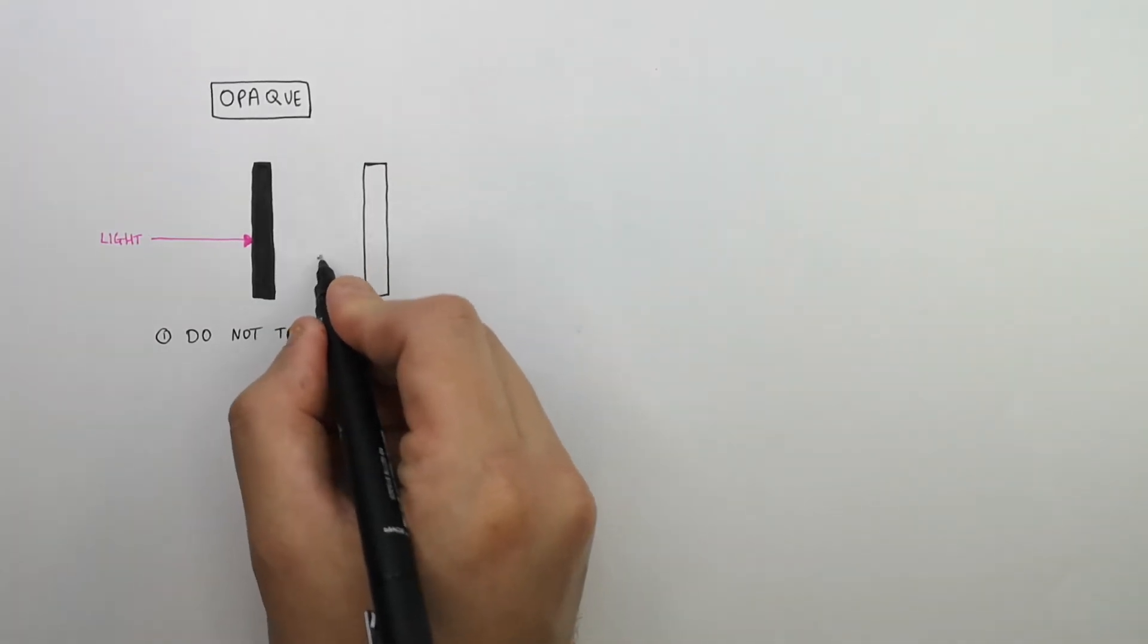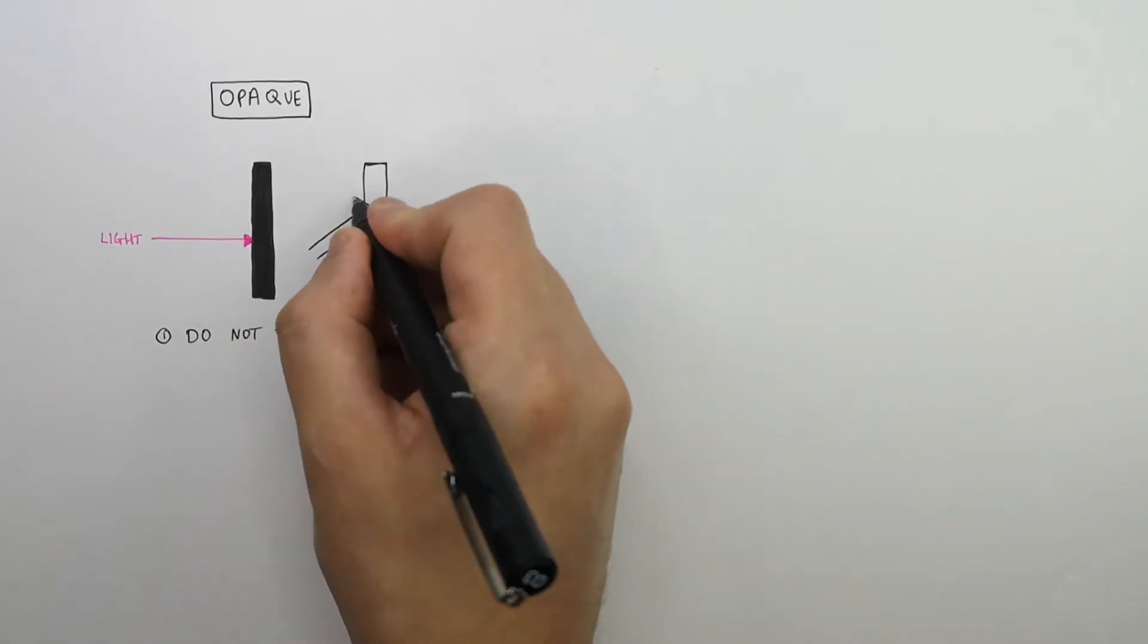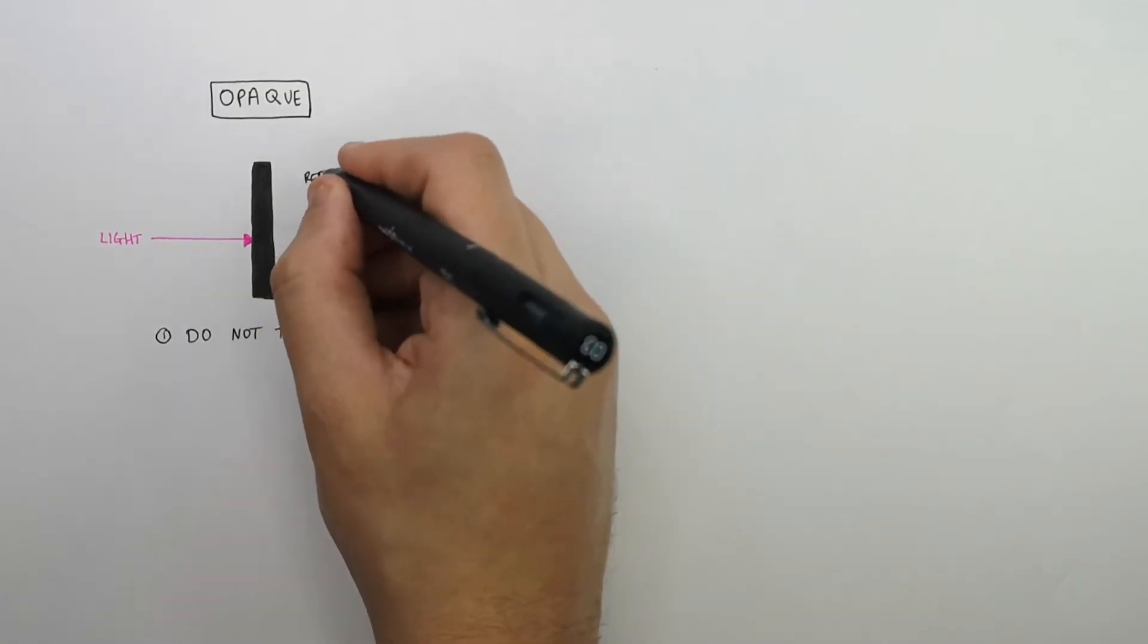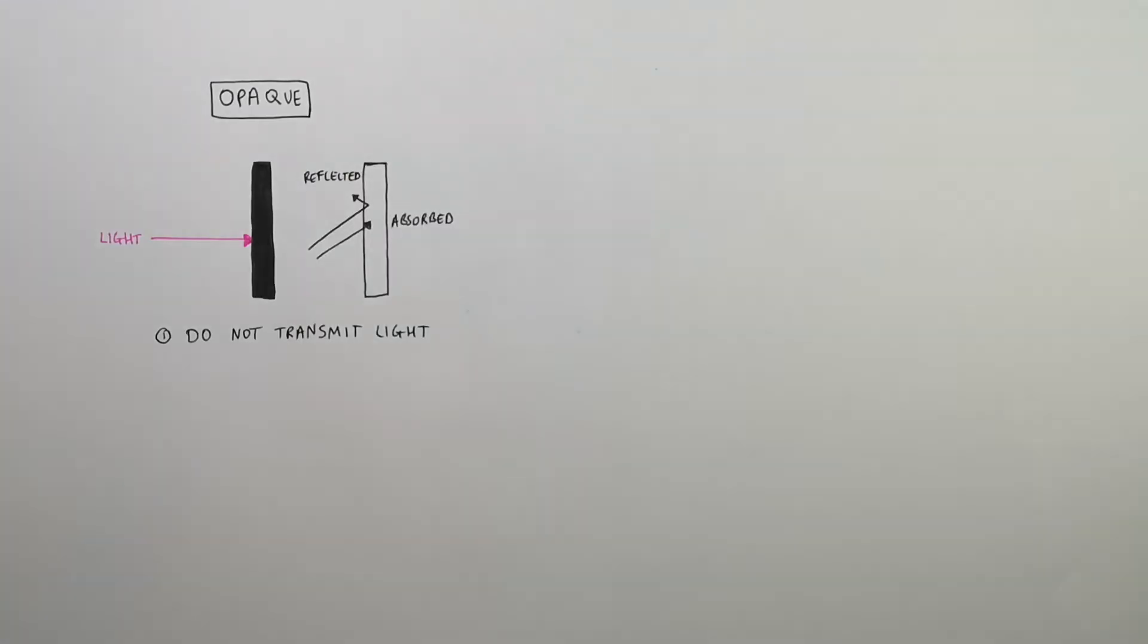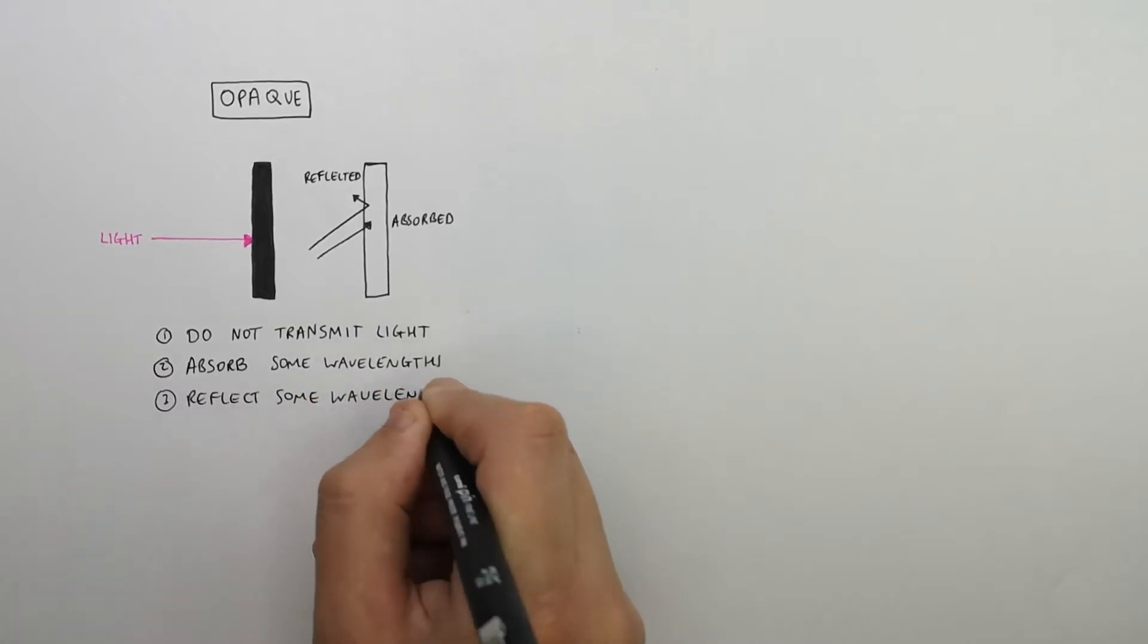Opaque objects will absorb or reflect light. So as you can see here, the light that hits an opaque object is not transmitted, but it is absorbed or reflected. Opaque objects will absorb some wavelengths and reflect some wavelengths.